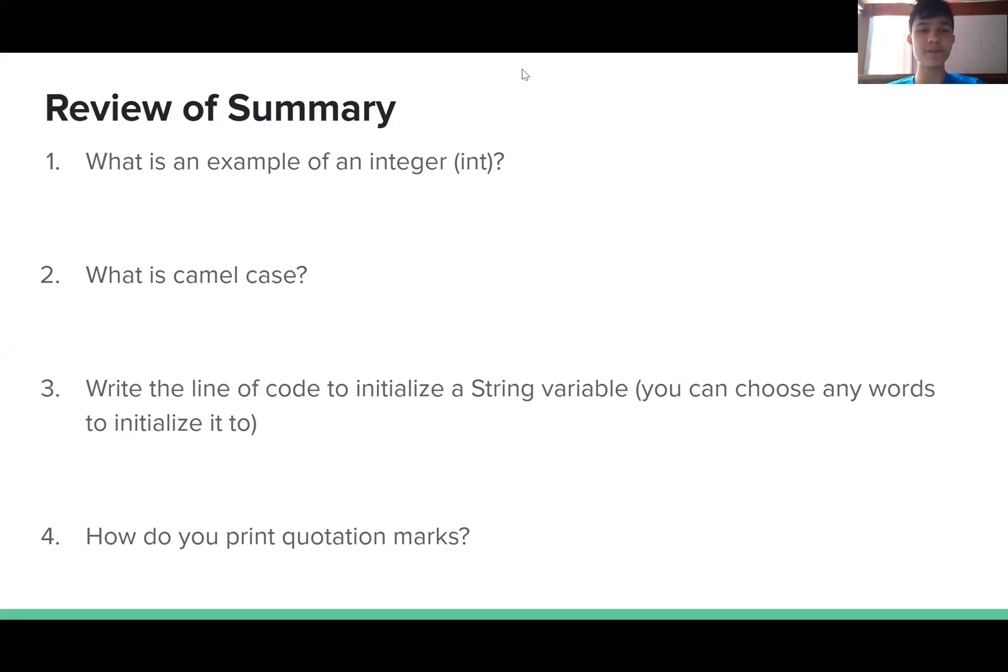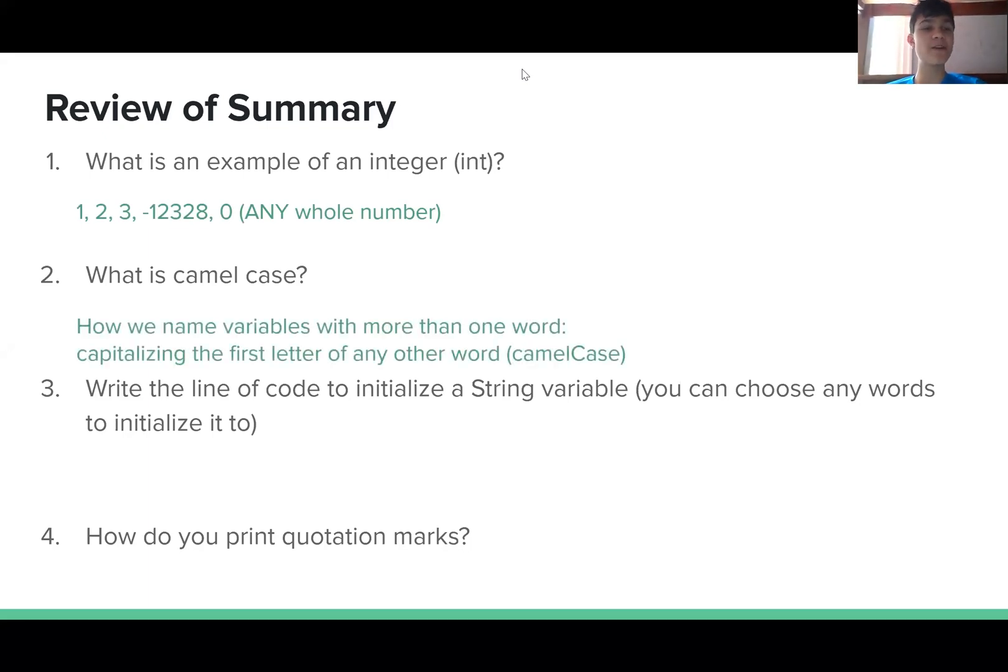So first we're going to review this summary from the previous lesson. Number one, what is an integer? An integer is any whole number and it can be positive or negative. What is camel case? It's how we name variables with more than one word by capitalizing the first letter of any other word besides the first word, which the first letter of that word is always lowercase.